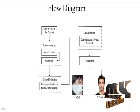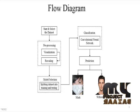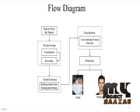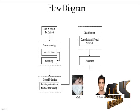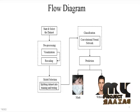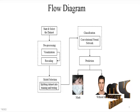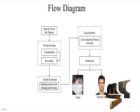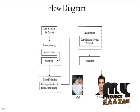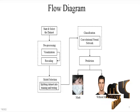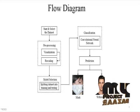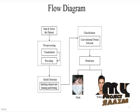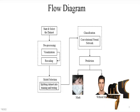Then it is processed into classification. In classification, we use the Convolutional Neural Network deep learning algorithm to train the mask and without-mask images and predict the results. If it is a mask image, it will show 'mask'; if it is without mask, it will show 'without mask'. Finally, it generates results in the form of metrics like accuracy, precision, recall, and F1 score.